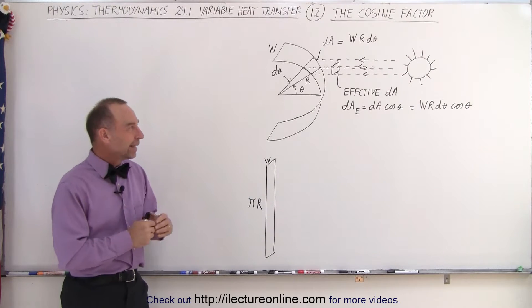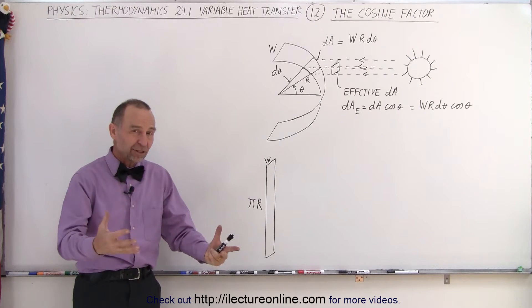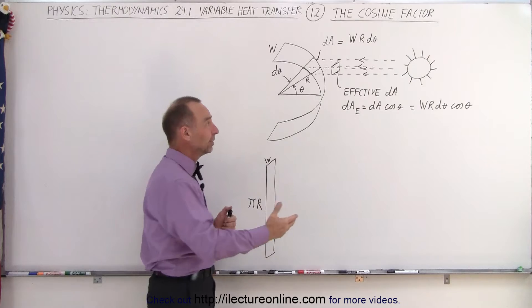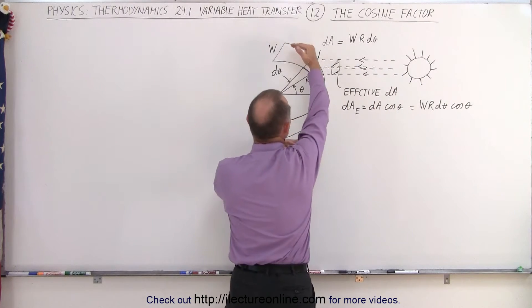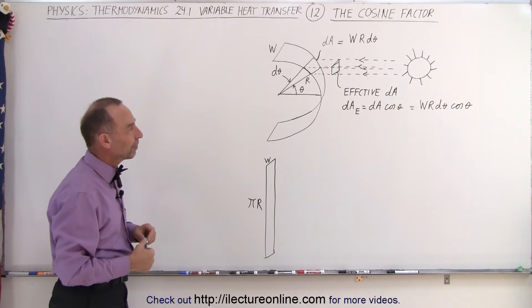Welcome to ElectronLine. Now we're going to explore the concept of an object, like a spherical object, being illuminated by a radiation source. For example, this could be the sun, and this could be the moon, or the earth, or some other planet, or any star, or any planetary system.